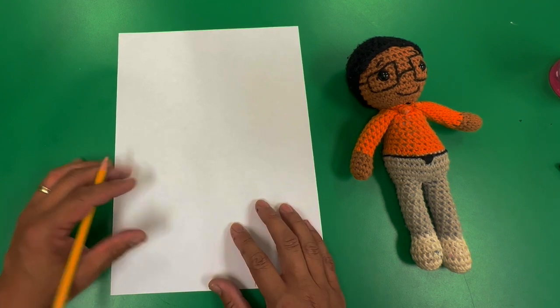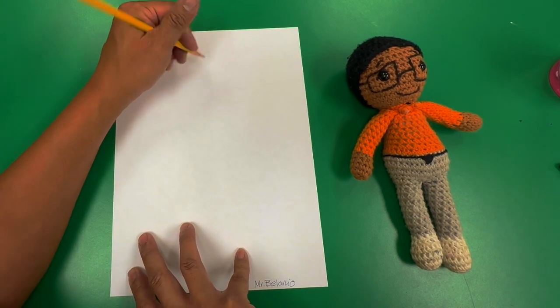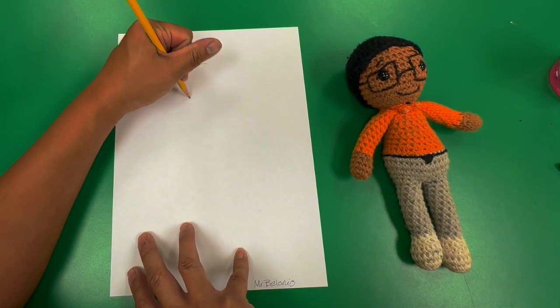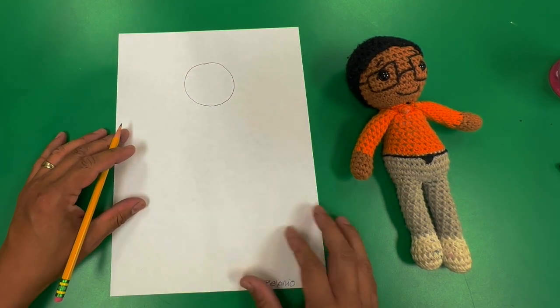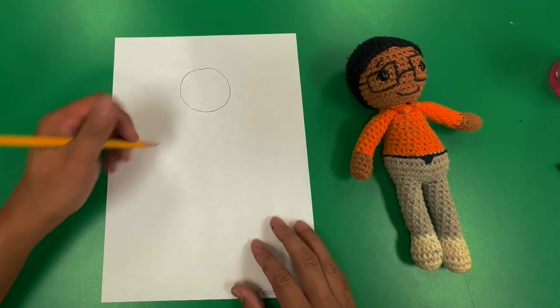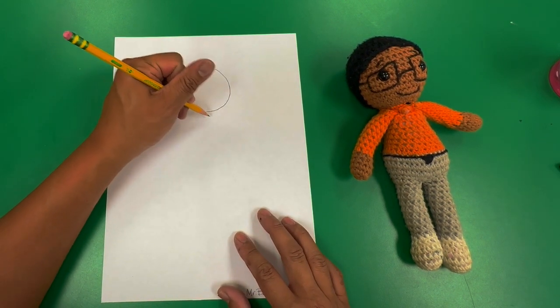Then remember, whenever we start a sketch kids, we start with basic shapes. So I'm going to start with the head shape. It could either be a circle or an oval. Make sure you're starting towards the top of the page.